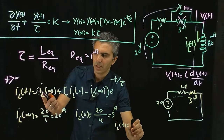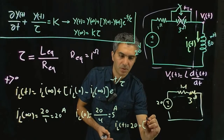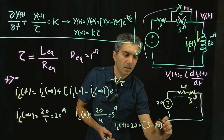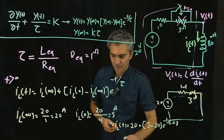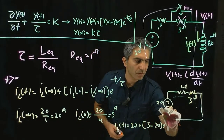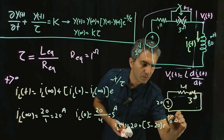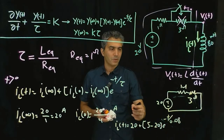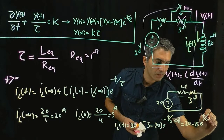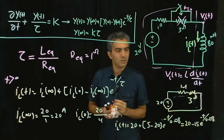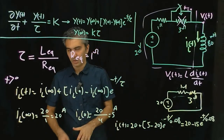With those values, I_L(t) = 20 + (5 − 20)·e^(−t/0.08) = 20 − 15·e^(−t/0.08). That concludes the calculation without doing any extensive circuit analysis.